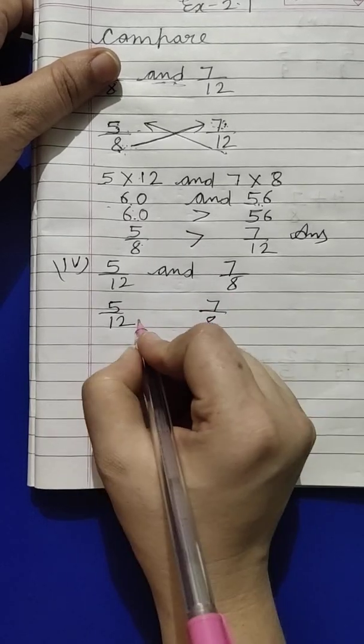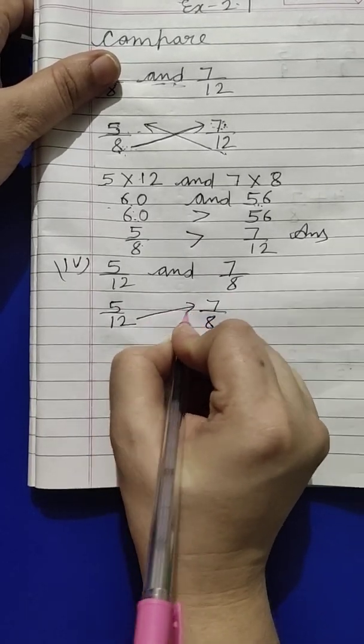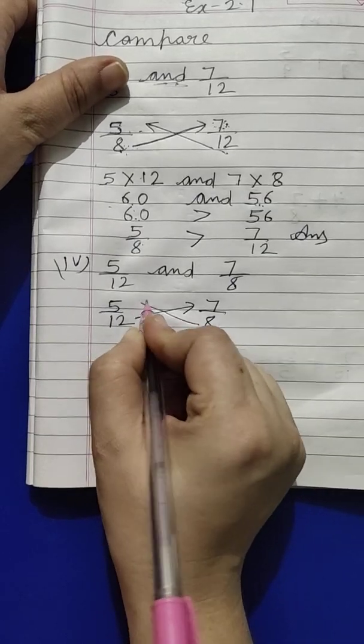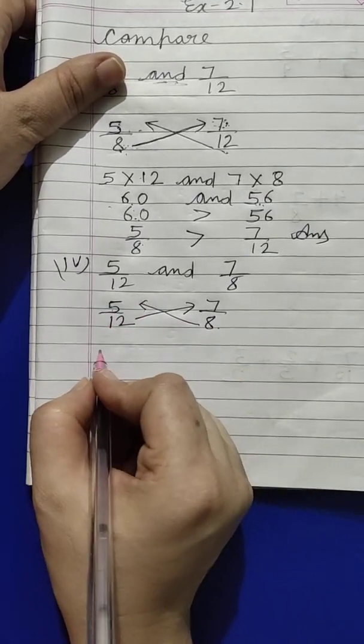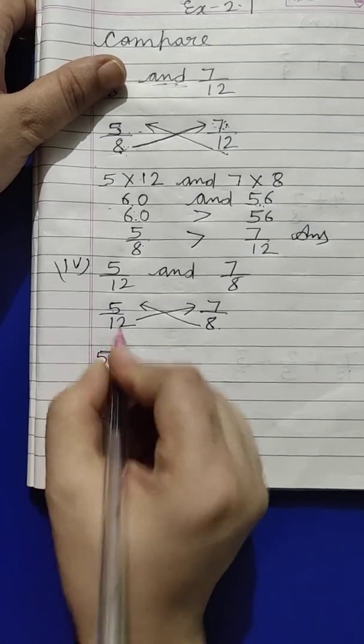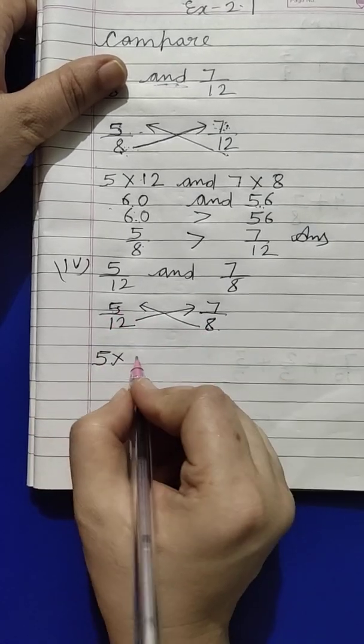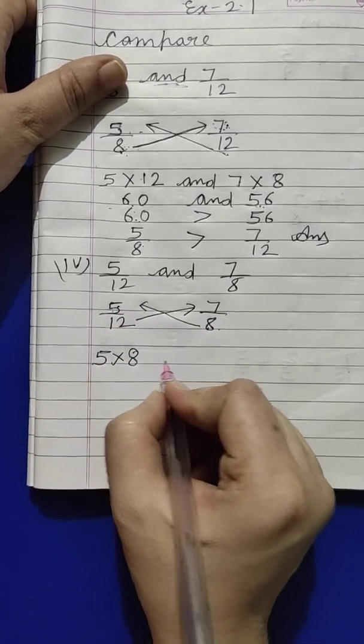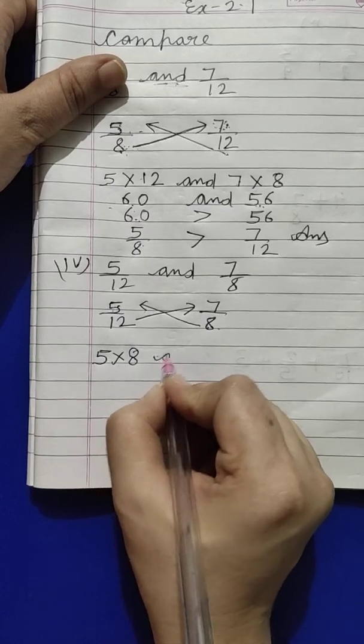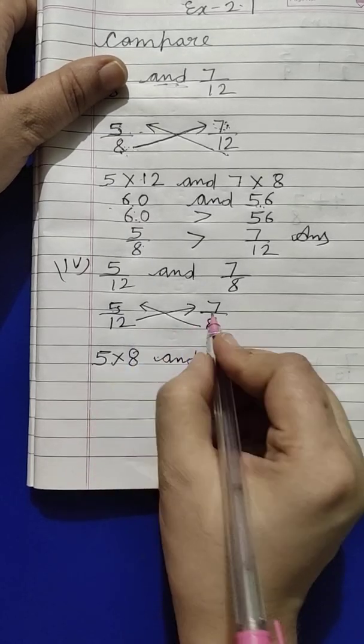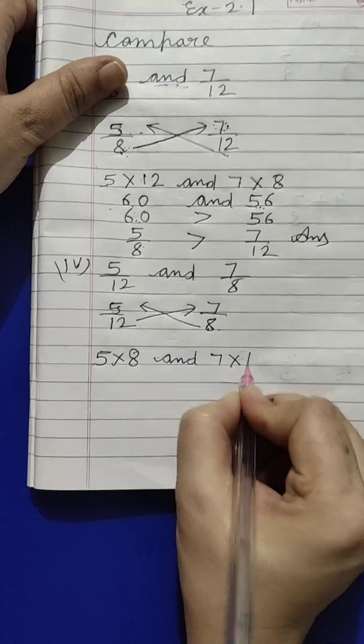Okay, now what do we do? Numerator first, we write. Who will multiply 5? 8. Now next, who will multiply 7? 12. Okay?